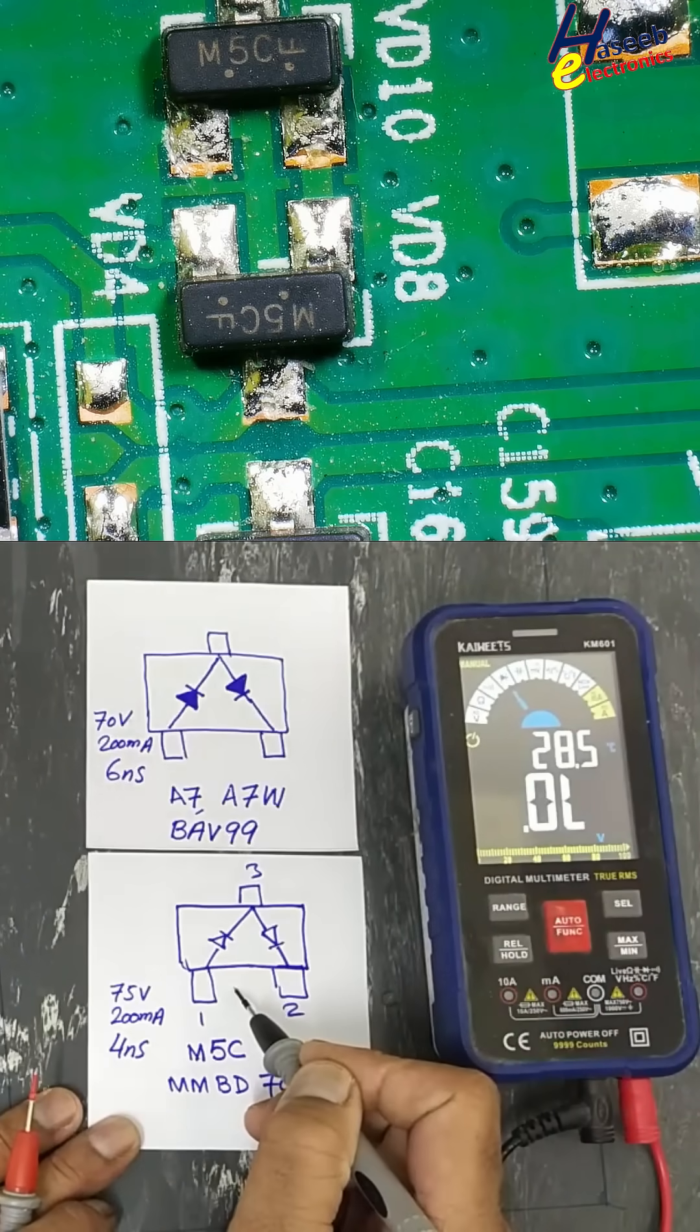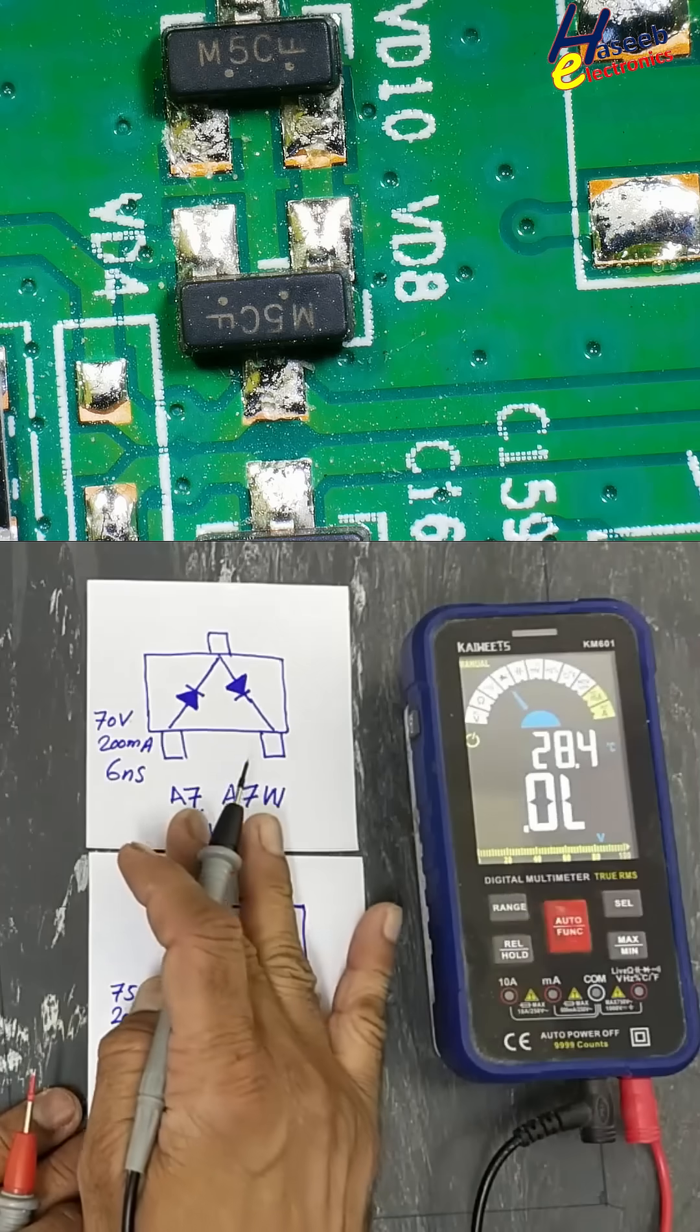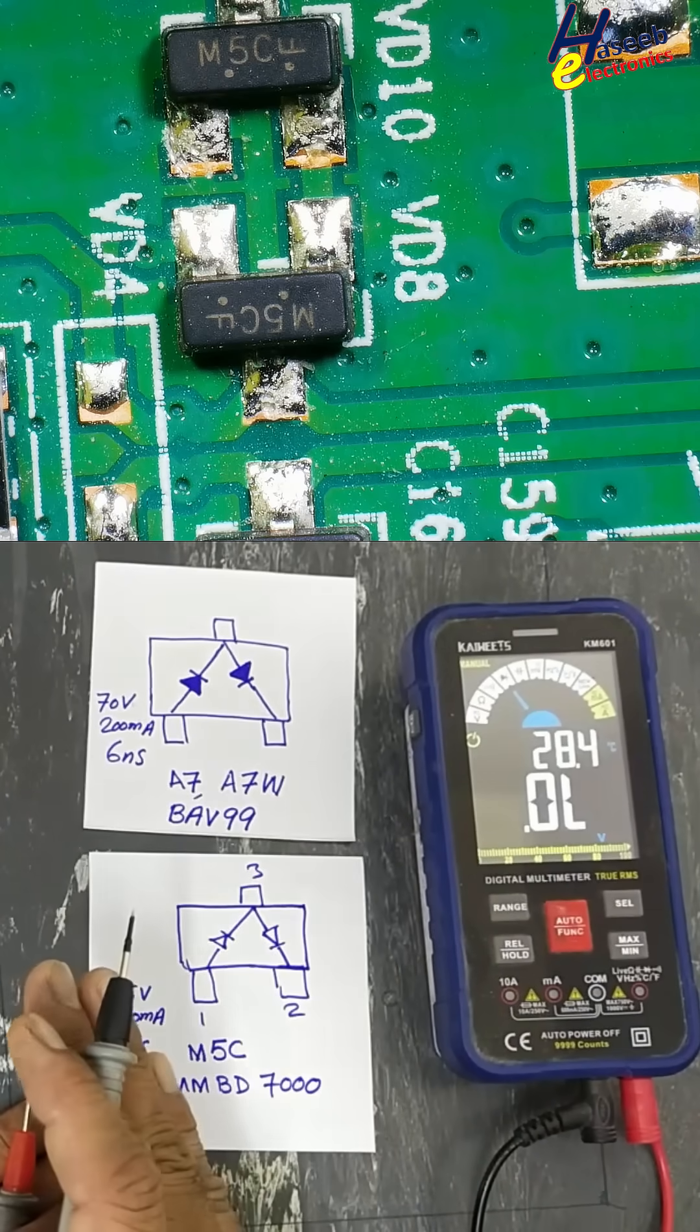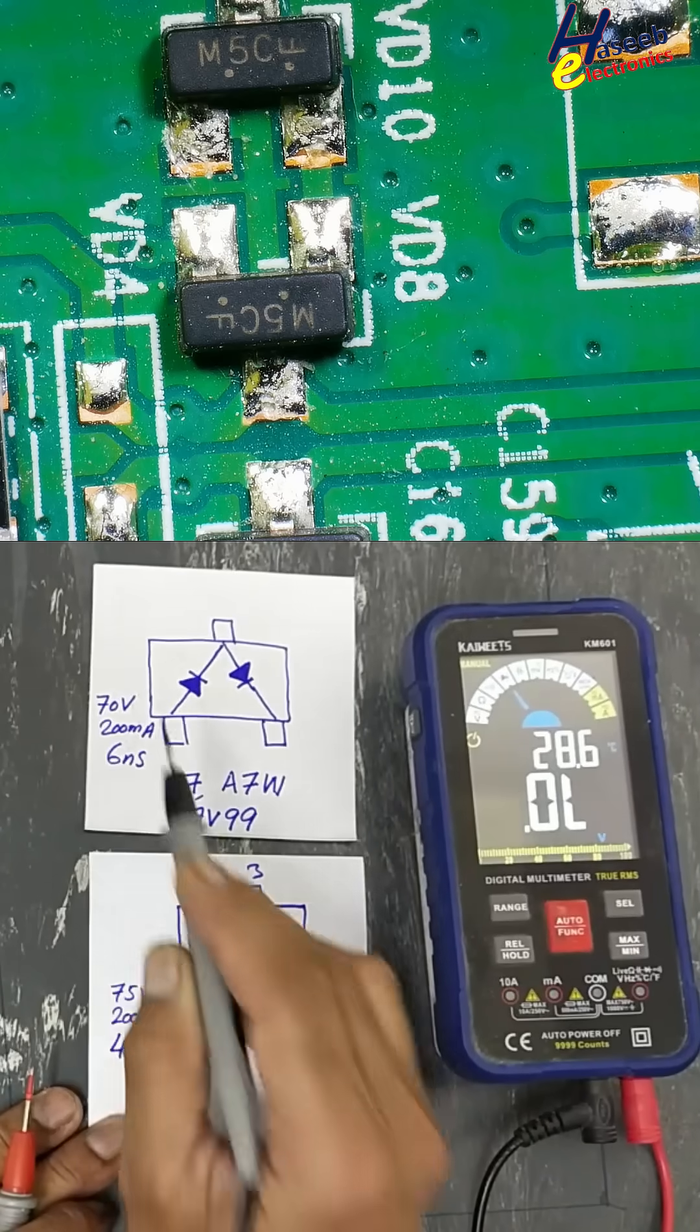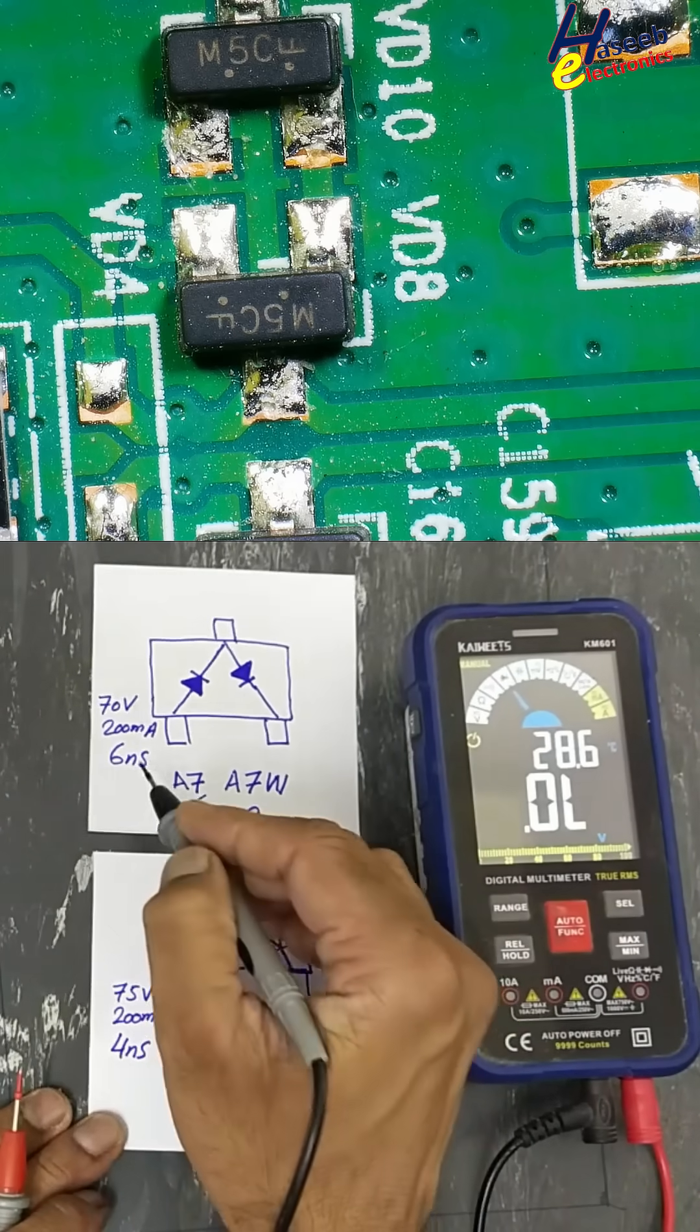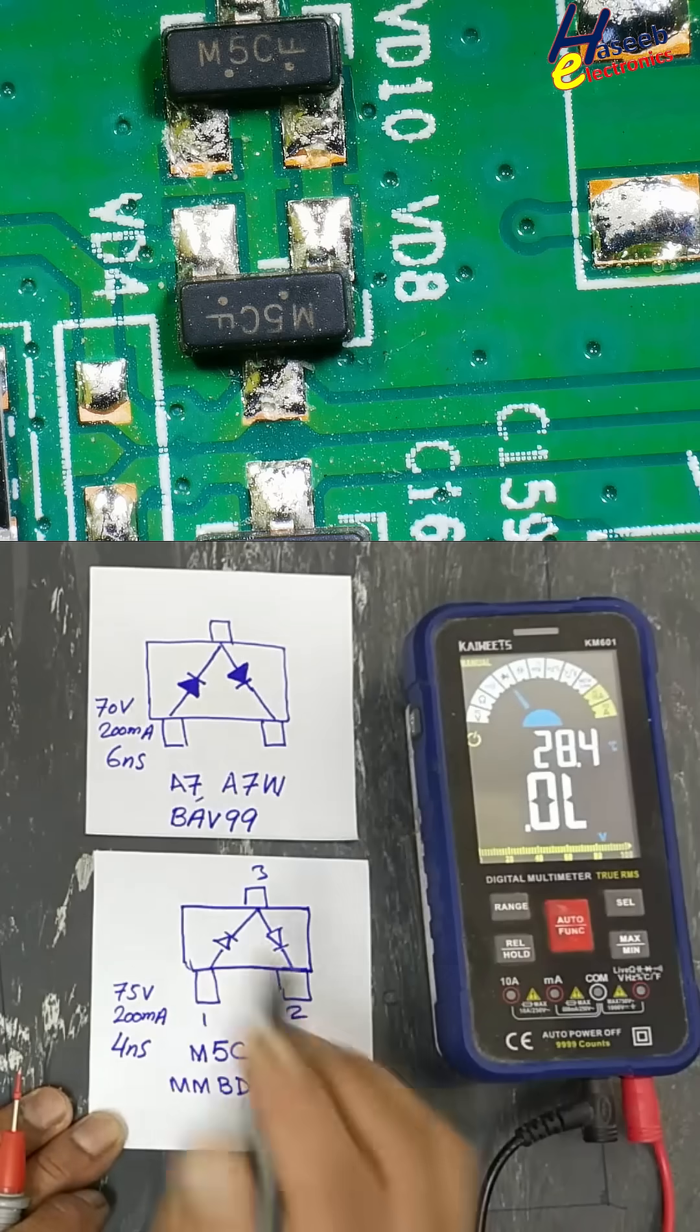This one is 75 volt and this is 70 volt. That's not a big difference because most components work from 60 to 70 percent of the maximum value. Both are 200mA. This has 6 nanosecond and this has 4 nanosecond recovery time. That's not a big difference.